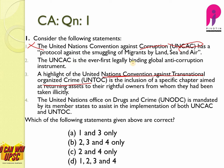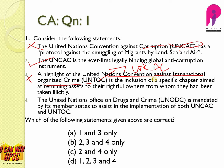UNCAC is the first legally binding global anti-corruption instrument — yes, this is correct. A highlight of UNTOC is the inclusion of a specific chapter aimed at returning assets to their rightful owners from whom they had been taken illicitly — no, this is wrong. Actually, that highlight belongs to UNCAC, not UNTOC.